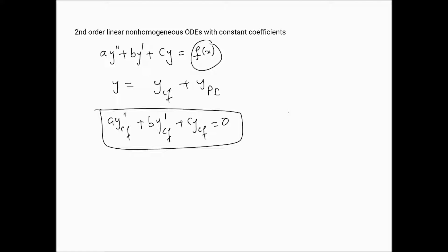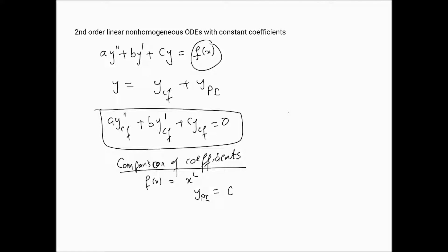The method we're using is called comparison of coefficients. If f(x) is x squared, then one logical approach is to assume the particular integral ypi is equal to Cx² + Dx + E, where C, D, and E are constants to be determined.